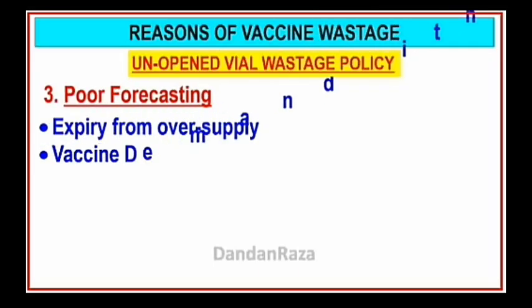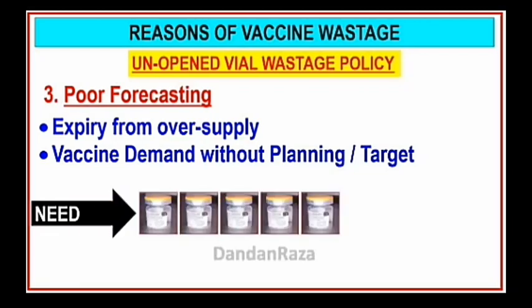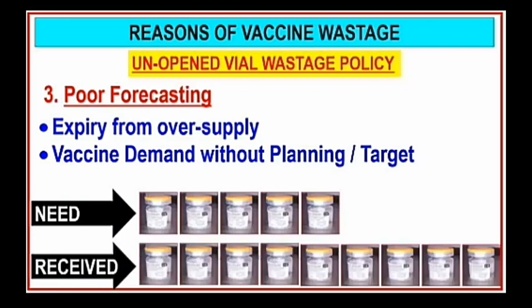Number three: poor forecasting causes expiry from over-supply. Vaccine demand without planning against target is the problem. For example, if we need five vials but we received nine vials, this is vaccine demand without planning.